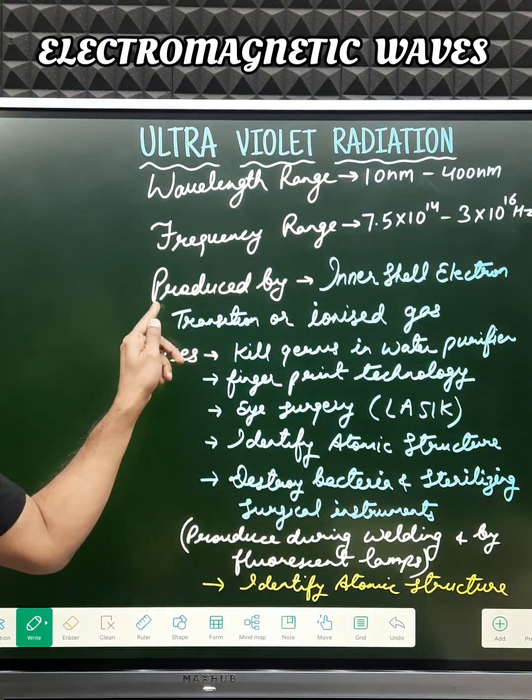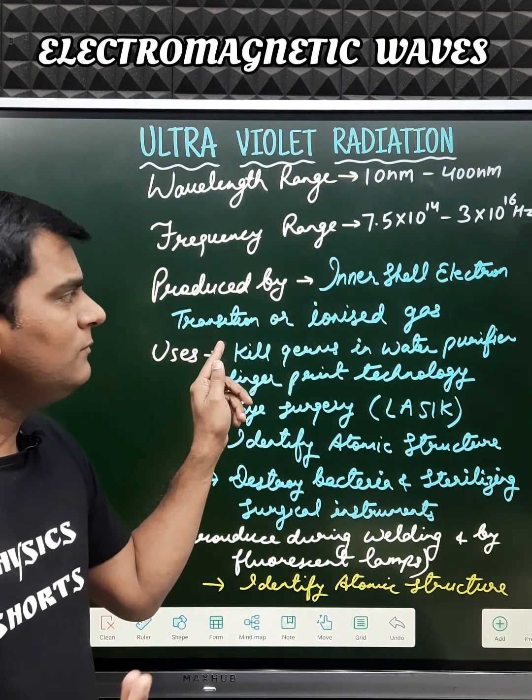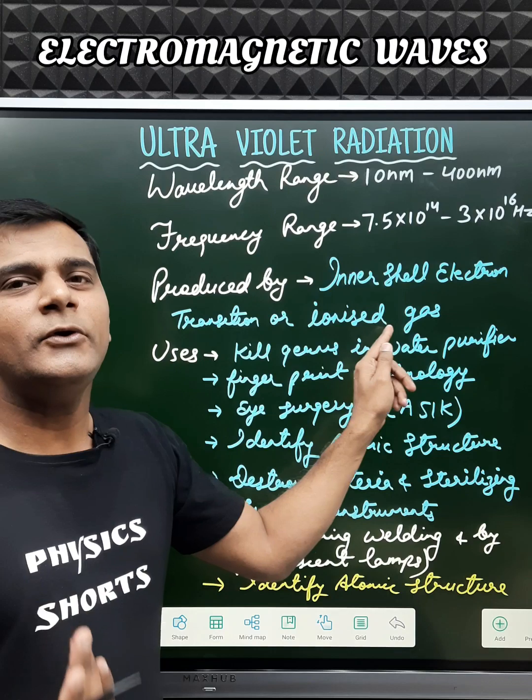These waves can be produced by inner shell electron transitions in atoms and also by ionized gas.